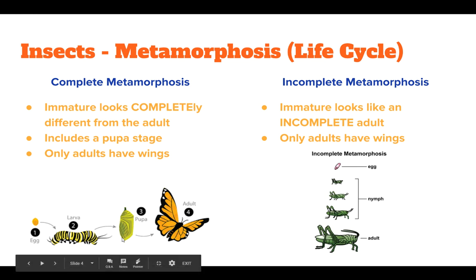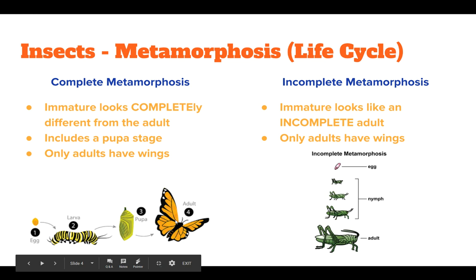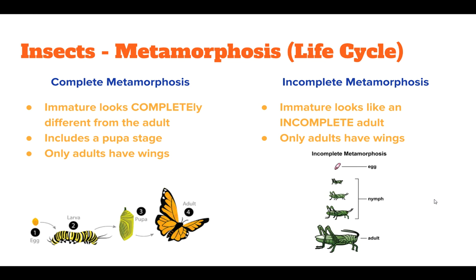Complete metamorphosis will always include some sort of cocoon or pupa stage, and in this type only the adults are going to have wings — so only the adults can fly. This goes back to the elementary example of egg → caterpillar → cocoon → butterfly that you can see right here. Our other type is incomplete metamorphosis, where the immature insect just looks like an incomplete adult — very similar, but smaller, wingless, and probably missing a few other characteristics.